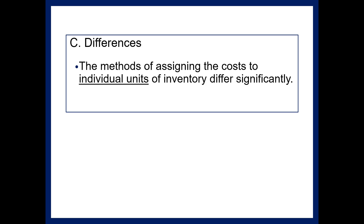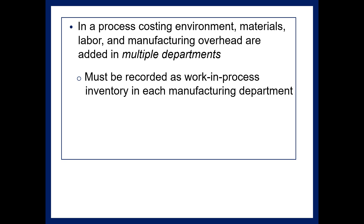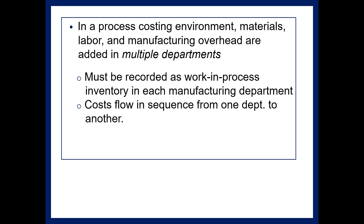The key difference is how we assign costs to individual units of inventory. In a process costing system, materials, labor, and overhead are added in multiple departments as products move from one process to the other. These costs must be recorded as work in process inventory in each department. For example, Campbell's Soup might have a washing department, a cutting department, a cooking department, a canning department, and a labeling department. Costs flow in sequence and accumulate as you move from one department to another.